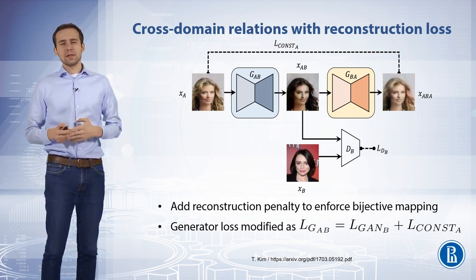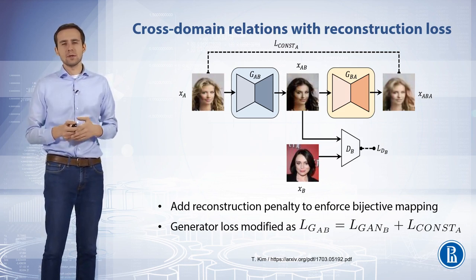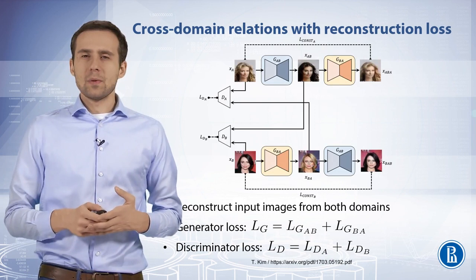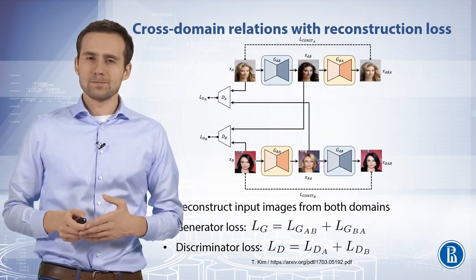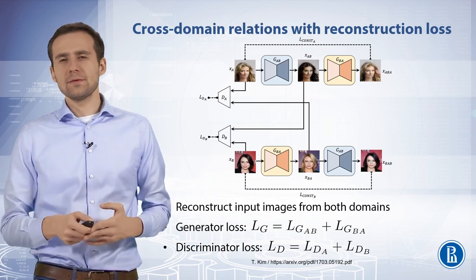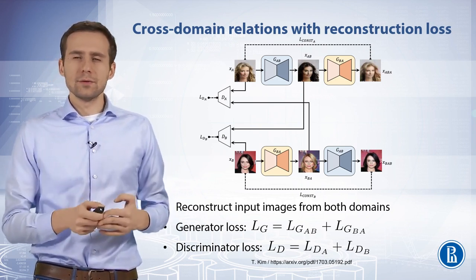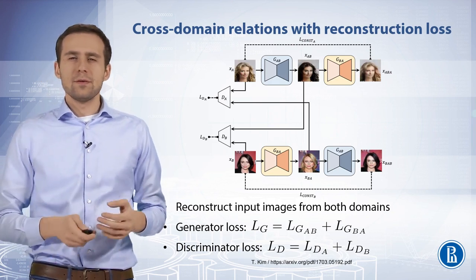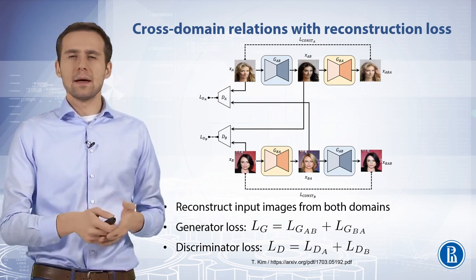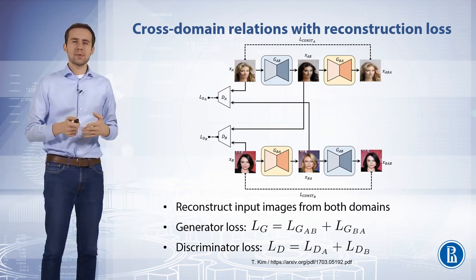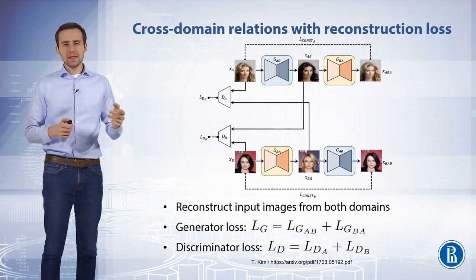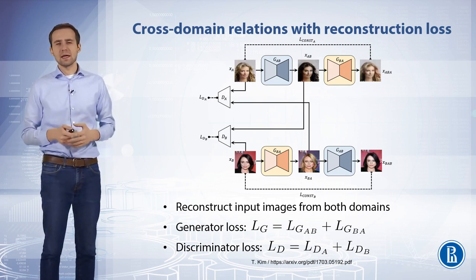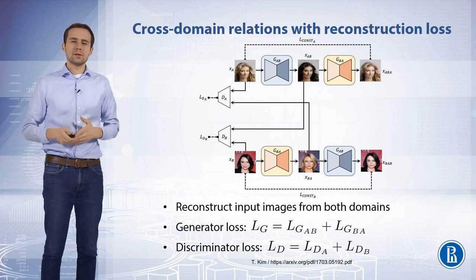The translated output XAB is then scored by the standard discriminator, which compares it to a real domain B sample, XB. Another step in improving the mapping quality is to employ two GAN models. Each of the two coupled models learns the mapping from one domain to another, and also the reverse mapping for reconstruction. The two models are trained together simultaneously. The two generators GAB and GBA share parameters, and the generated images XBA and XAB are each fed into separate respective discriminators DA and DB, and the whole model is trained simultaneously.